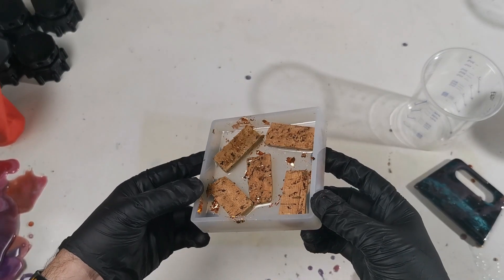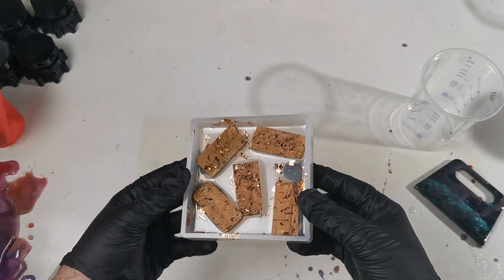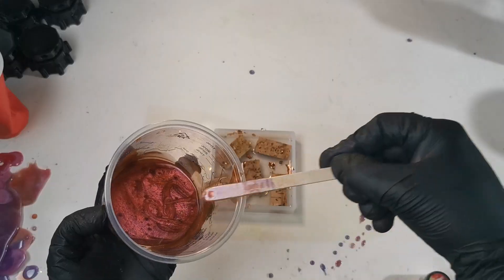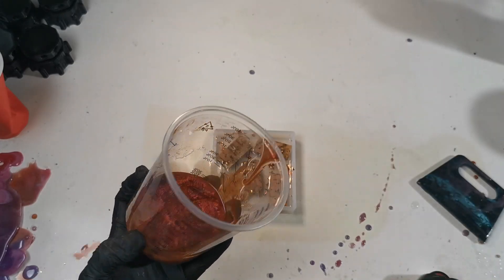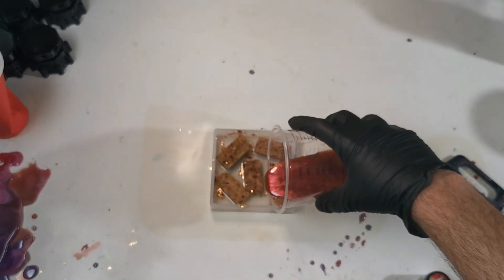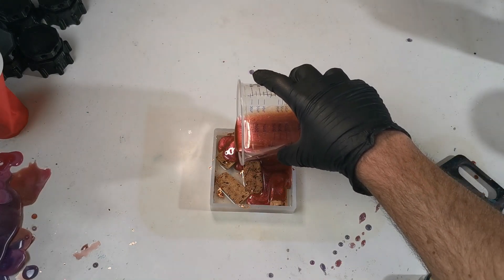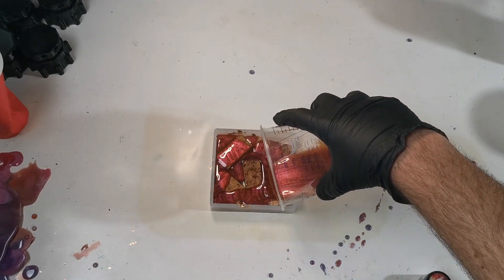All right so using the Temu resin that first clear layer has dried with the corks in there and so now I'm going to add a colored layer to make this coaster. Gone with a burgundy type color here as I think this will make the corks stand out and that's quite a nice mica powder I had so looking forward to seeing what the results are for this coat.